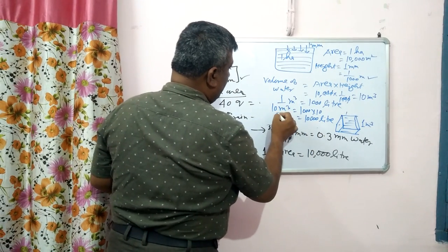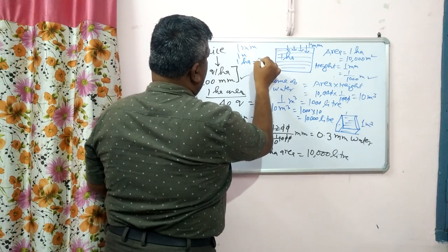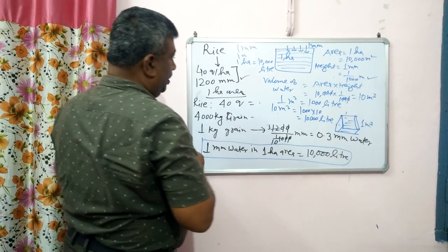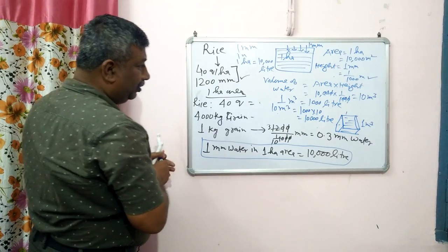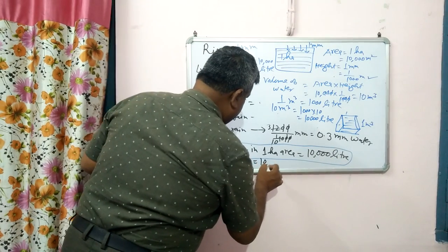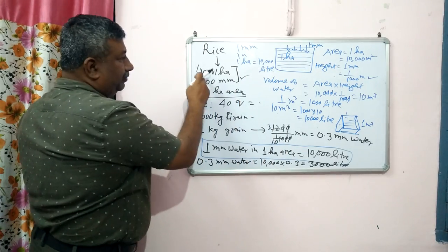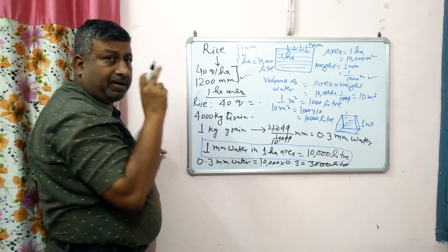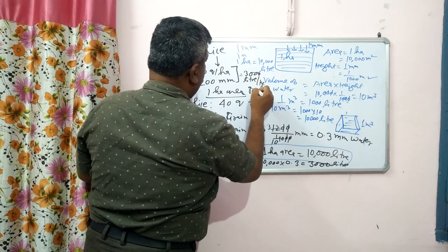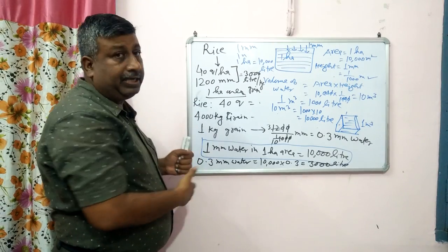So this confirms that 1 mm of water over 1 hectare area equals 10,000 liters. Now in the case of rice, the water requirement is 0.3 mm per kg of grain. So 0.3 mm in 1 hectare area = 10,000 × 0.3 = 3,000 liters. This means 40 quintal of rice requires 1,200 mm of water, which is equivalent to 3,000 liters per kg of grain.